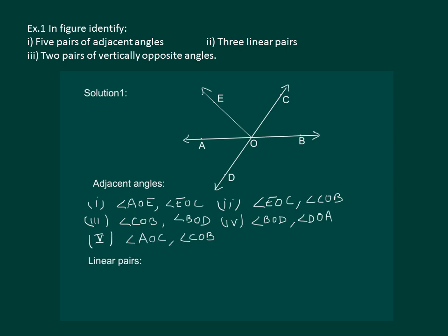Second part of the question is to identify three linear pairs. So first linear pair can be angle AOE and angle EOB. The second pair could be angle AOC and angle COB. Third one could be angle AOD and angle BOD.